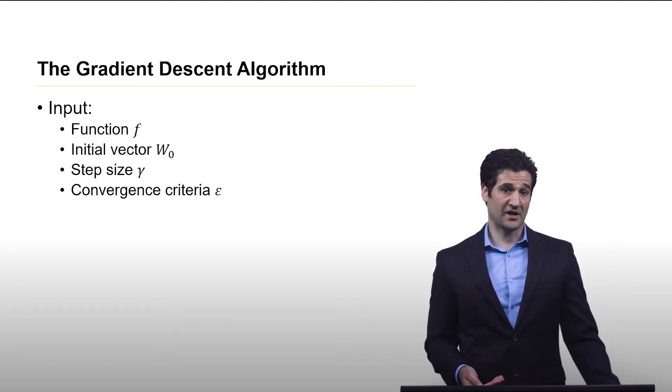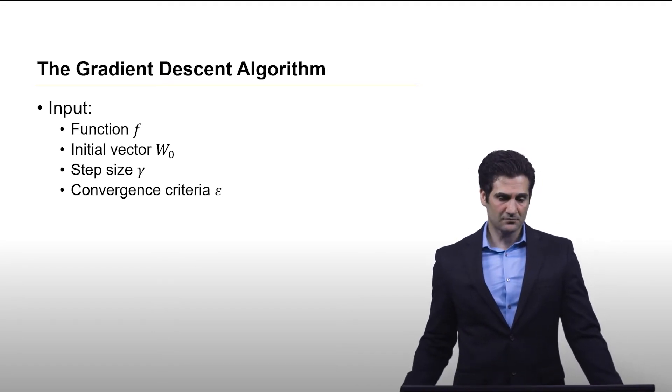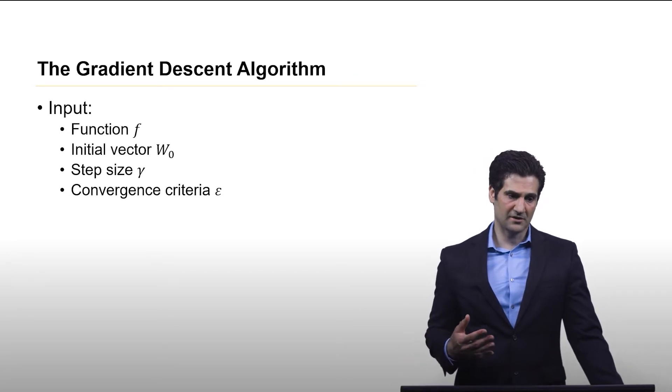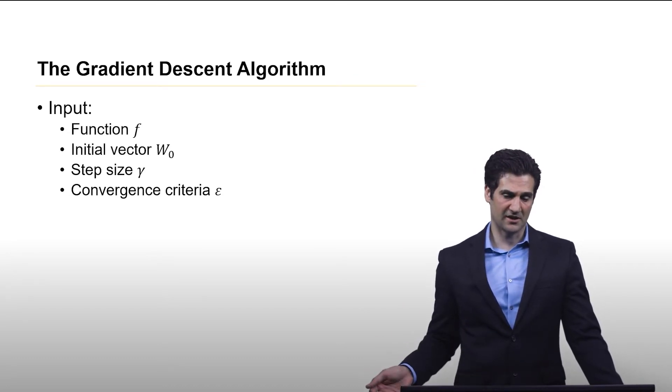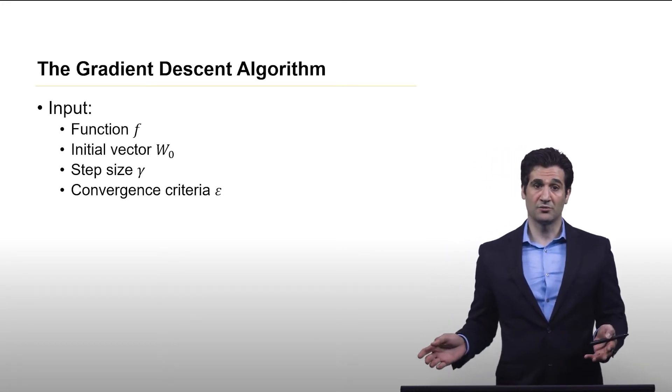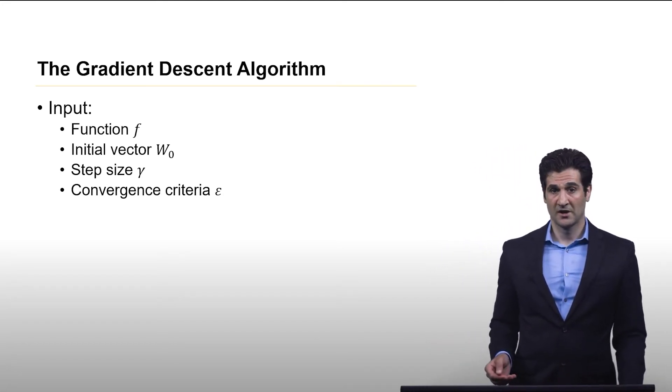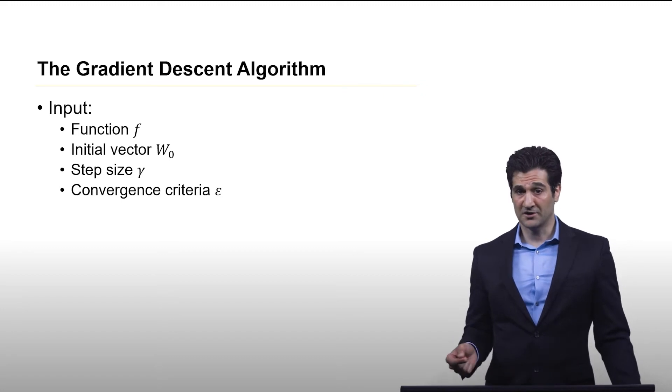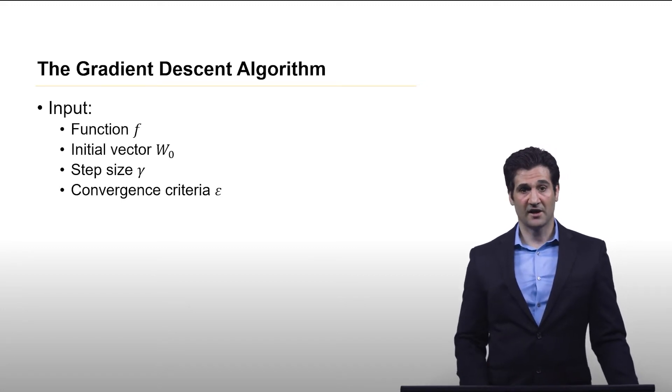You have the step size, which dictates the change in the gradient at each step of the algorithm and also affects the convergence. And then you have the convergence criteria, which is when do we stop changing the weights? And this deals with, we don't want to change the weights more than that epsilon value.